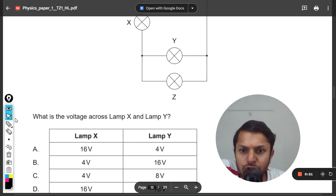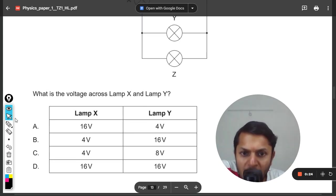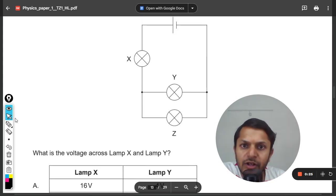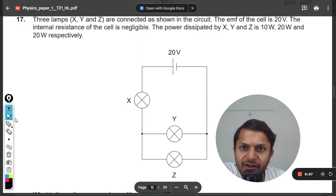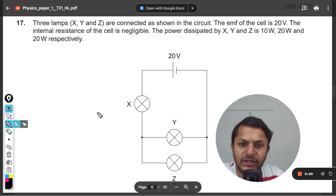What is the voltage across lamp X and lamp Y? So first of all, let me redraw the circuit so that we can understand what is happening here. We can draw this circuit like this.